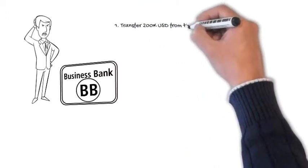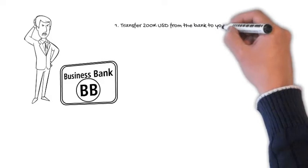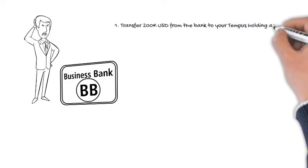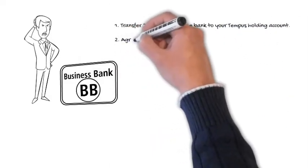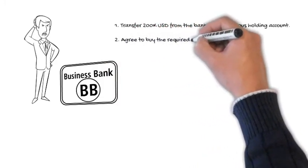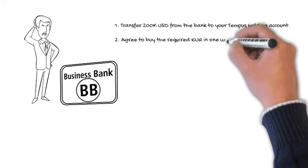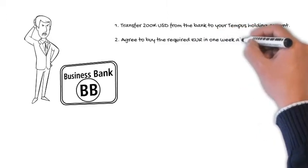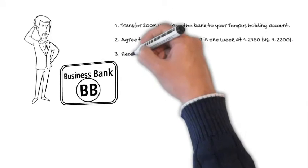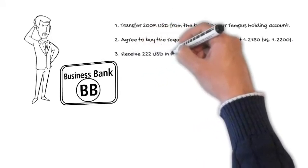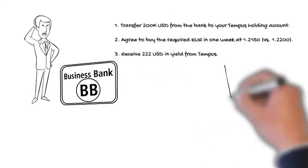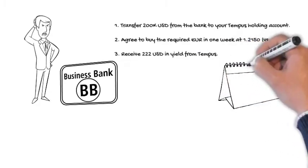So how do you monetize that? First, all you have to do is transfer $200,000 from your bank to your Tempest holding account. Then you simply agree to buy the euro that you require — instead of four weeks from today, one week out at the exchange rate of $1.2150, better than what the spot market is now. Right away, you're going to receive $222 in yield from Tempest.